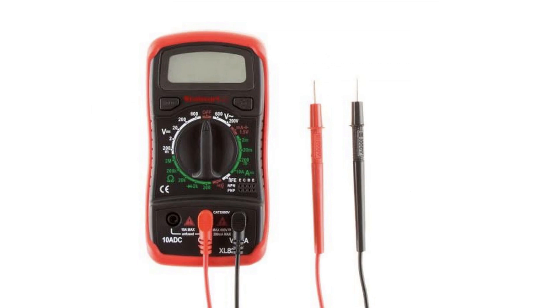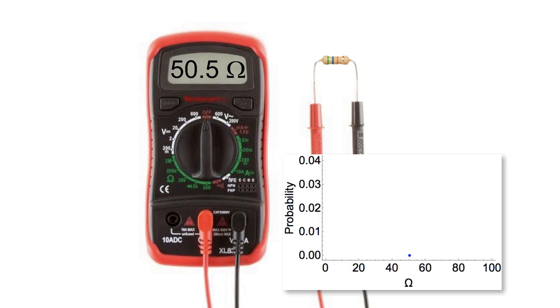Any sensor you build or buy will give you a reading, but that reading is always approximate. For example, if you take a resistor and use your digital multimeter and it says this resistor is 50.5 ohms, that doesn't mean the resistor is really 50.5 ohms.